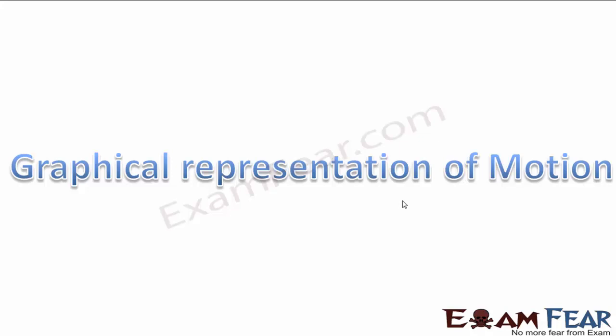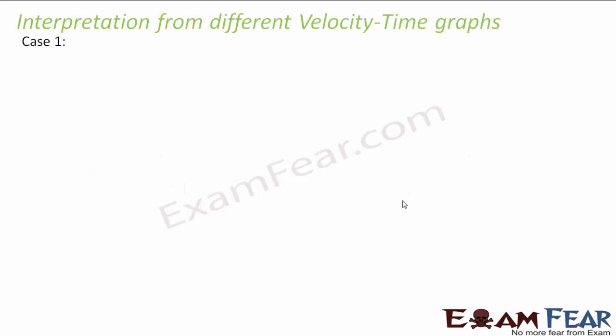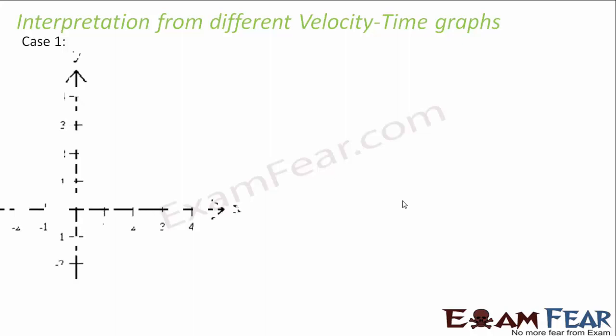Graphical representation of motion is very helpful because just by looking at the graphs you can get a lot of information about an object's motion. We have already studied distance-time graphs and position-time graphs. Now let us look at some velocity-time graphs and interpret what they tell us about the motion. Velocity is always along the y-axis and time along the x-axis.